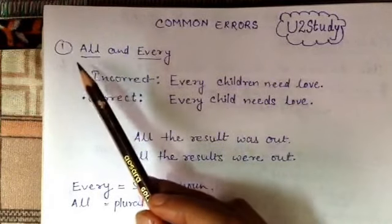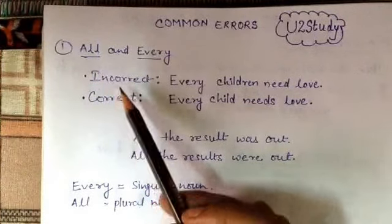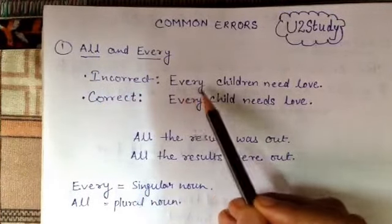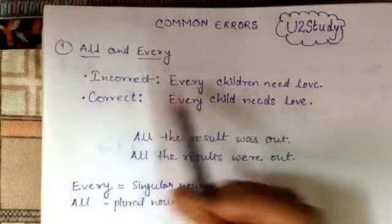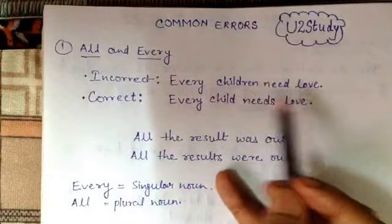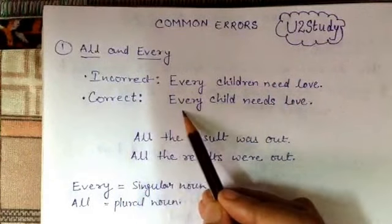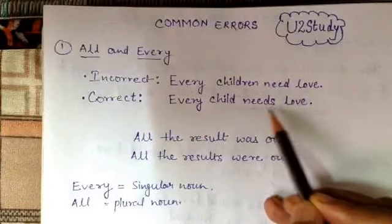First is all and every. The sentence is 'every children need love.' This is incorrect. The correct form is 'every child needs love.'